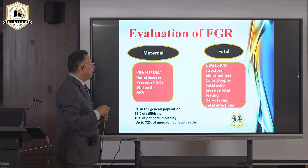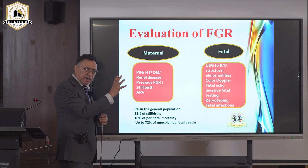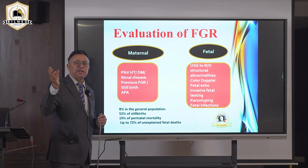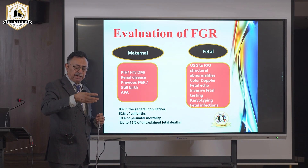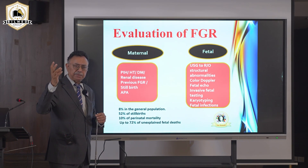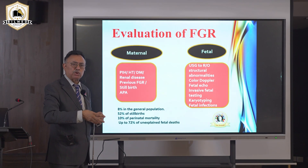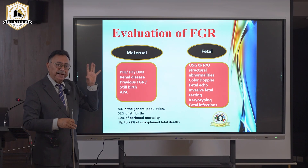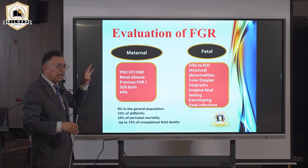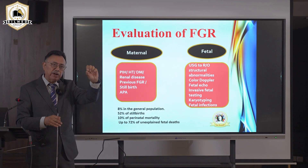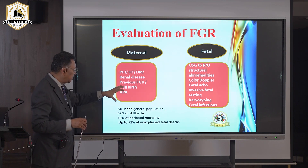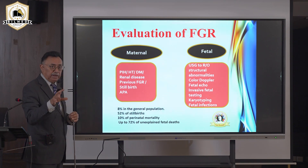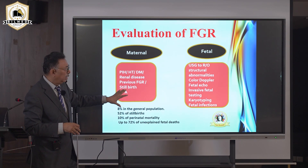For evaluation of fetal growth retardation, we look at both the maternal and fetal sides. On the maternal side, FGR occurs because the uterine artery fails to supply adequate blood — due to cardiac disease, renal disease, diabetes, starvation, poor socioeconomic status, chronic diseases, pregnancy-induced hypertension causing uterine artery constriction, and antiphospholipid syndrome.